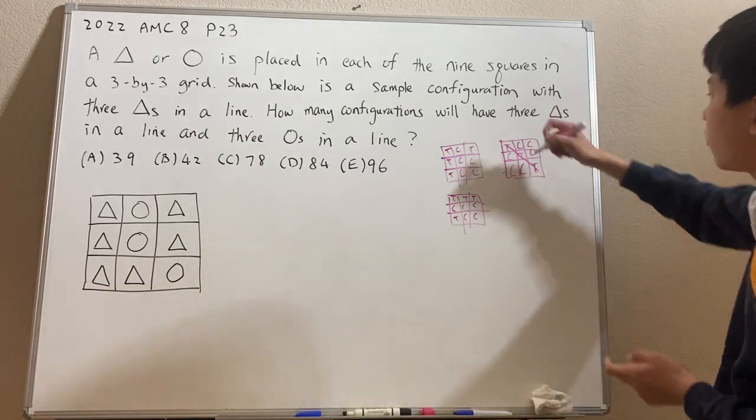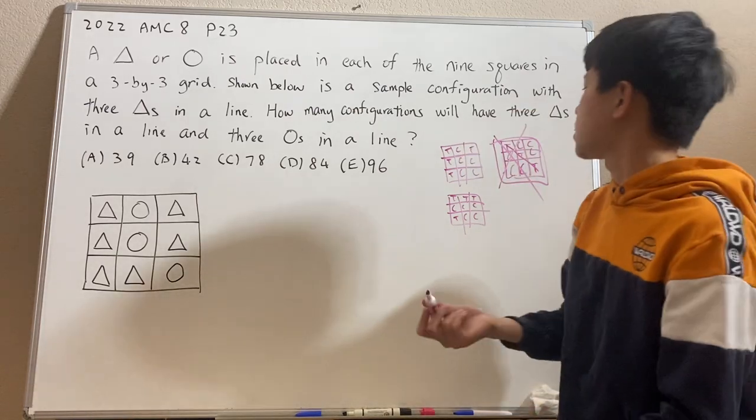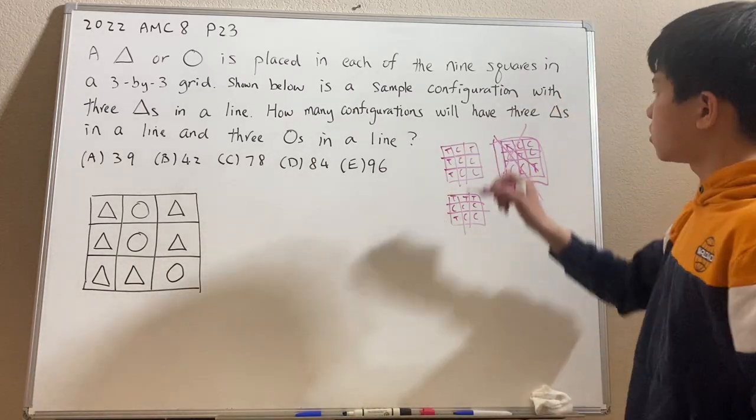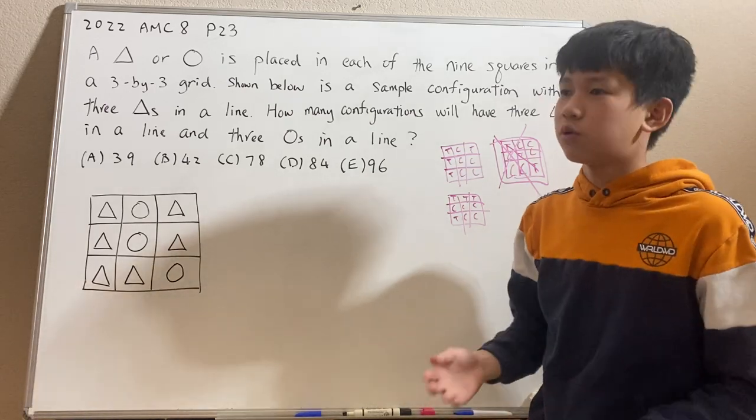So therefore, it's impossible. This case of T is in a diagonal or C is in a diagonal does not work. So this tells us that the only possibilities are for T to be in a vertical line and for T to be in a horizontal line.